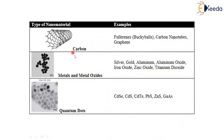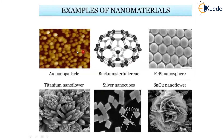For carbon-based nanomaterials, examples include fullerenes, carbon nanotubes, and graphene. For metals and metal oxides, examples include silver, gold, aluminum, aluminum oxide, iron oxide, zinc oxide, and titanium oxide. For quantum dots, examples include CdSe, CdS, CdTe, and PbS. Visual examples shown include a silver nanoparticle, a fibidina sphere, and a titanium nanoflower — which literally looks like a flower.